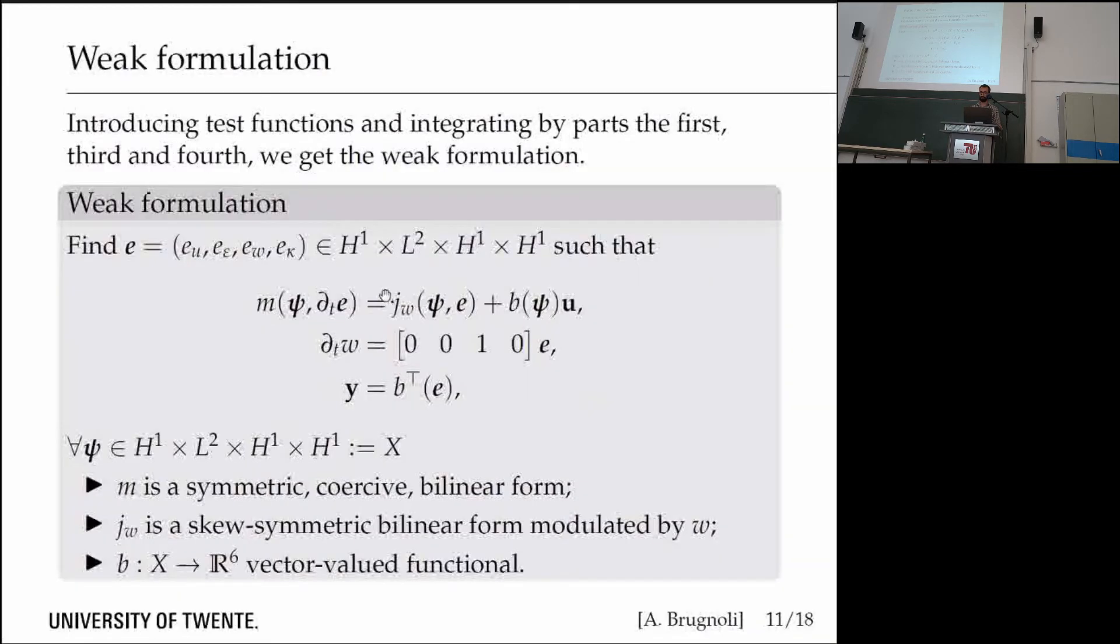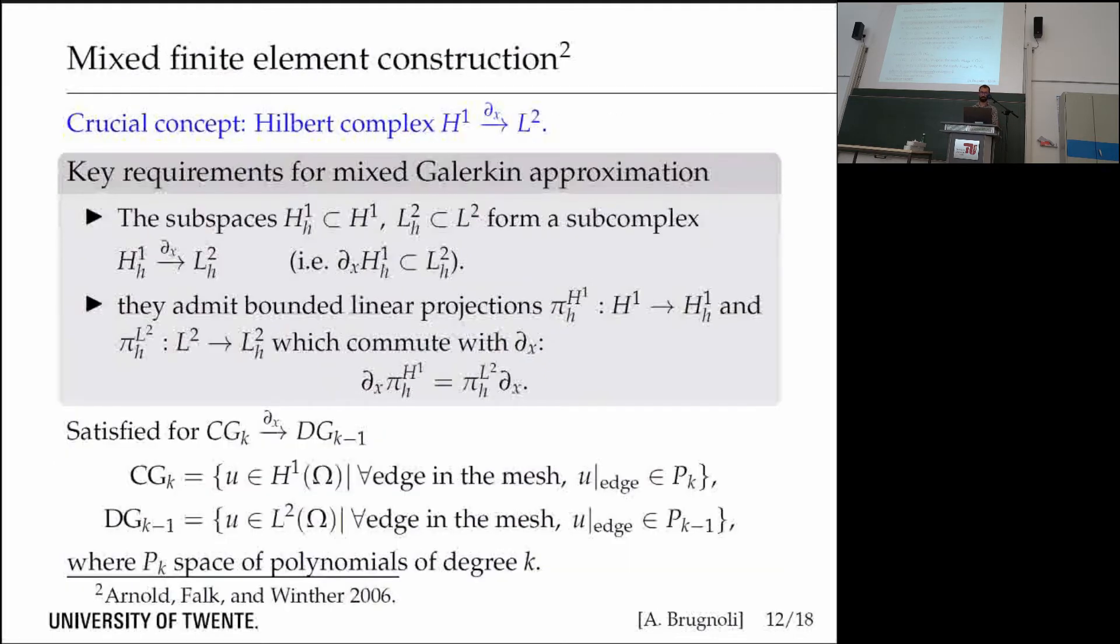In compact formulation, we need to find this co-energy variable in such a space such that we have this mass bilinear form, this J_w which is a skew-symmetric bilinear form modulated by W. And B is a vector-valued functional collecting the values of the test function at the extremities of the beam.